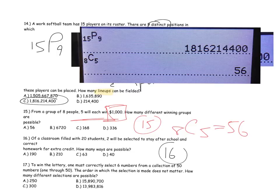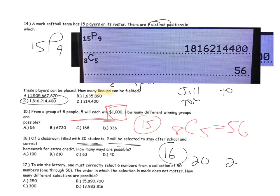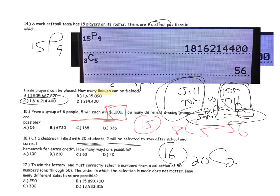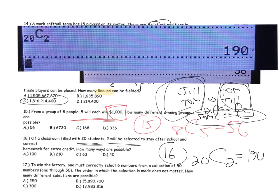Problem sixteen: of a classroom of 20 students, two will be selected to stay after school and correct homework for extra credit. How many ways are possible? I have 20 and 2. Choosing Jill and Tom to stay is the same as choosing Tom and Jill — the order doesn't matter. If switching the order gives the same result, it's a combination: 20C2, or 190 different ways.